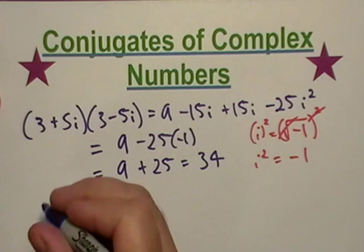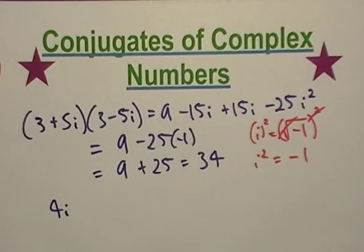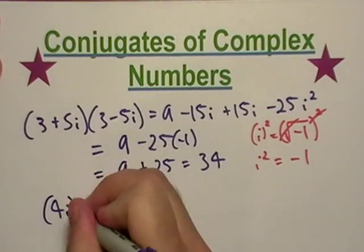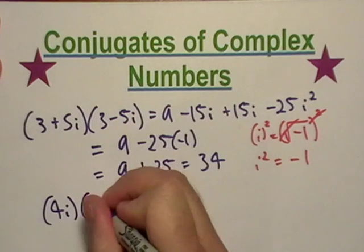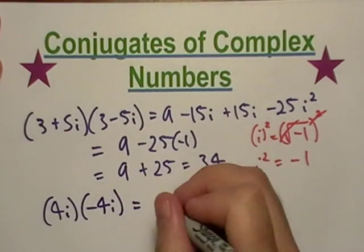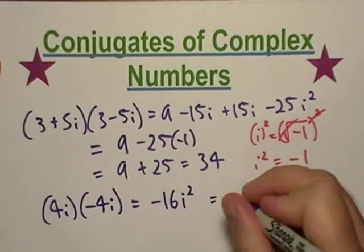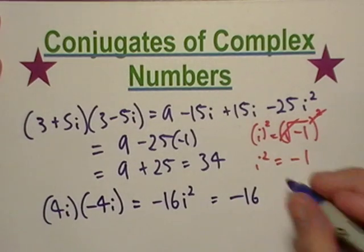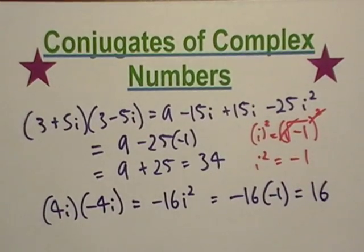Let's try it again. Let's just do this one, 4i. If I take 4i and I multiply it by negative 4i, let's see what happens. We get negative 16i squared, which is equal to negative 16 times negative 1, which is equal to 16.